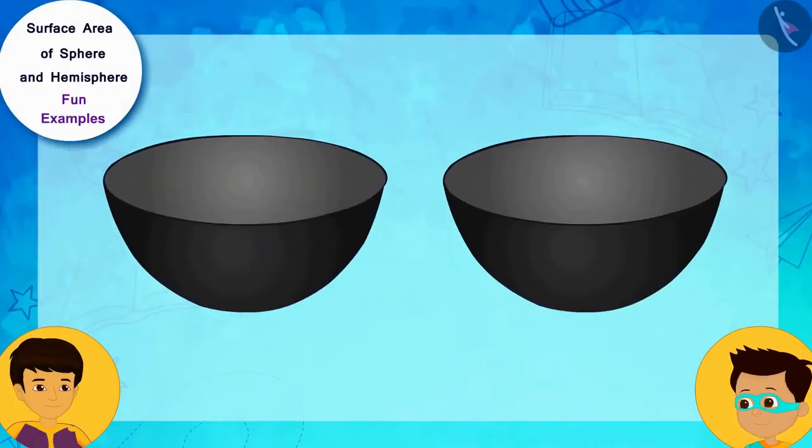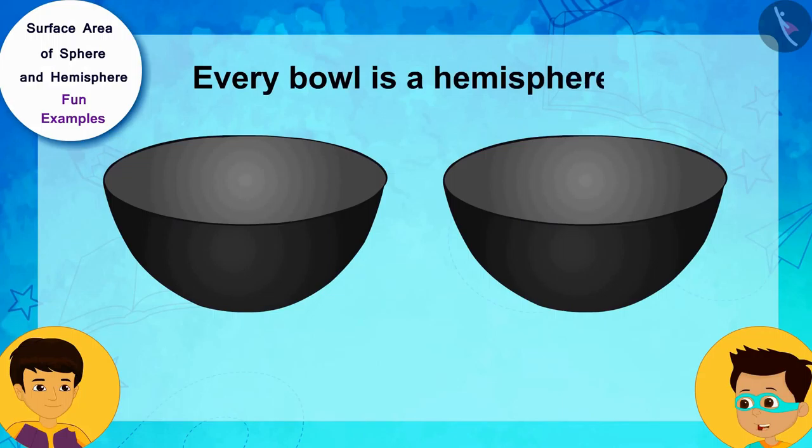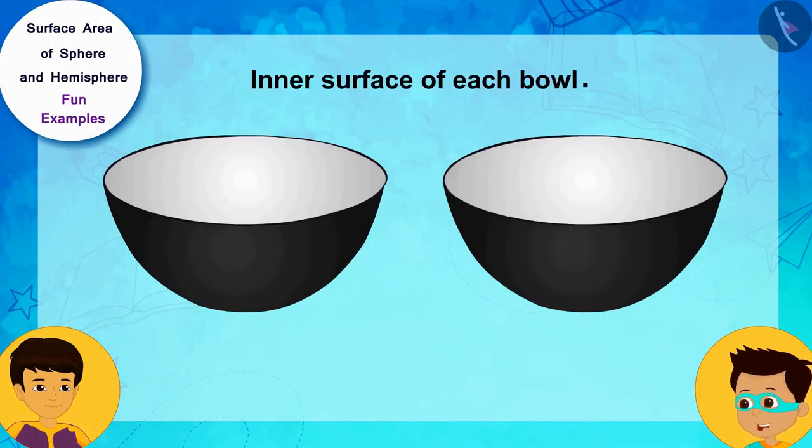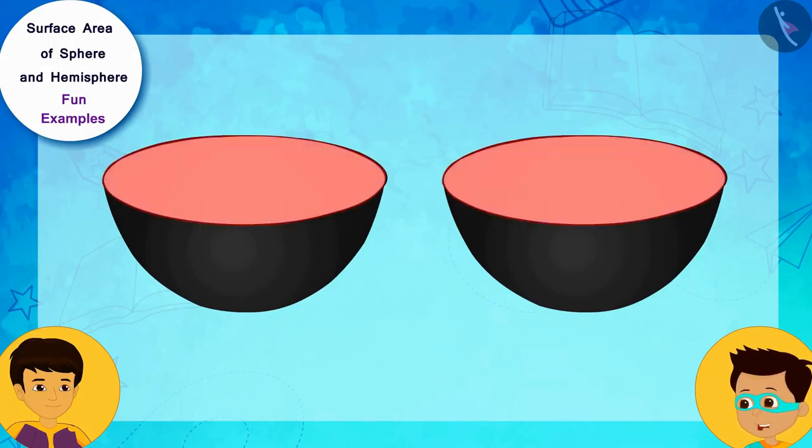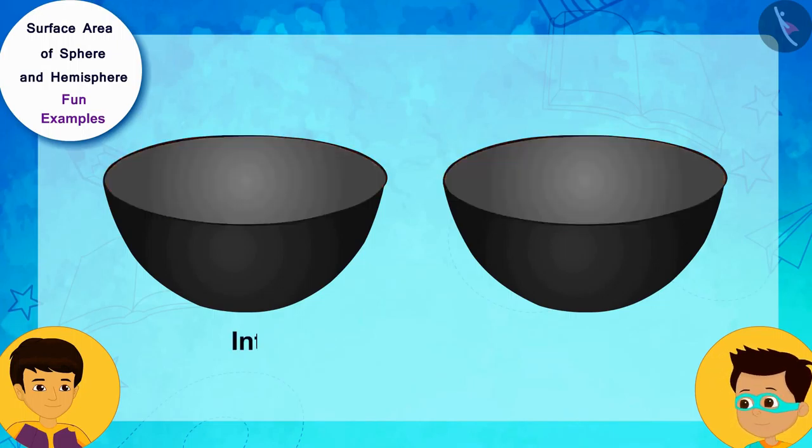Look, every bowl is a hemisphere. And because we have to get the inner surface of each bowl covered, the surface of each bowl will be equal to its internal curved surface area. Oh, is it?